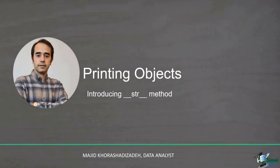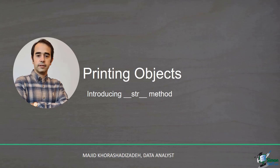So far you have learned the concept of class, object, methods, and attributes. In the last two videos, we defined a class for bank account. And in this video, I'm going to introduce a new special method called __str__, which is responsible for printing objects. So stay tuned and let's jump into code to learn more about this method.